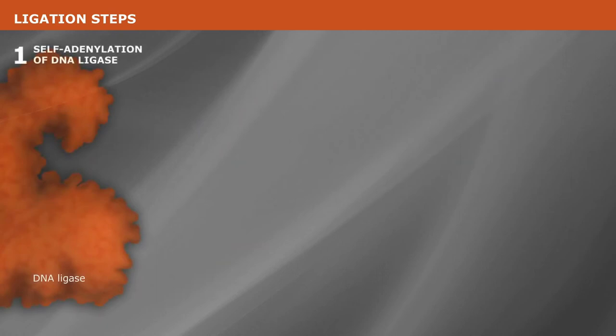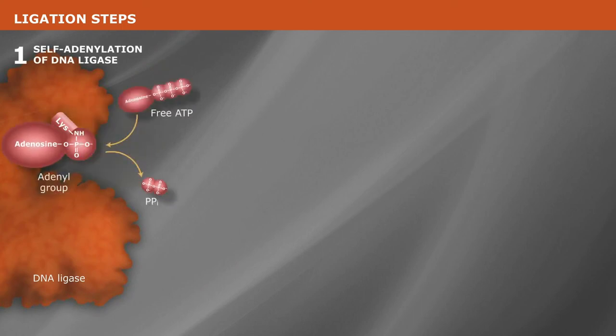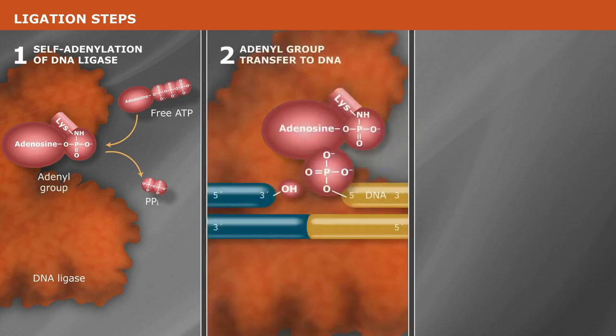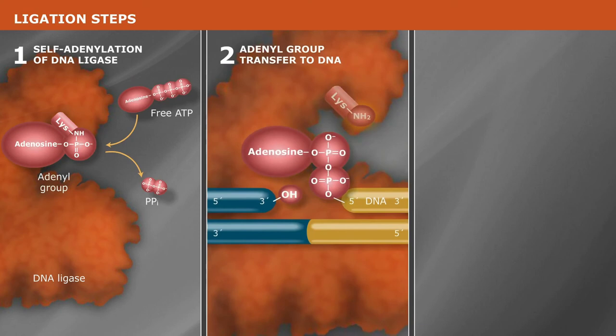Initially, the ligase is self-adenylated by reaction with free ATP or NAD. Next, the adenyl group is transferred to the 5'-phosphorylated end of the donor strand.